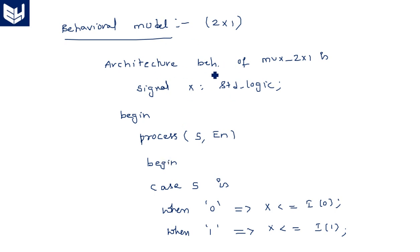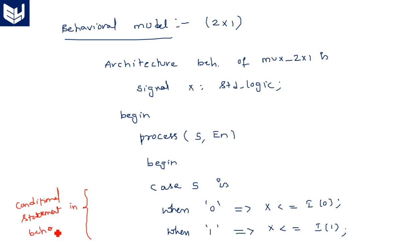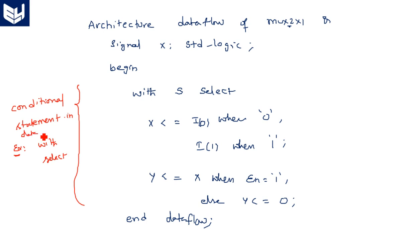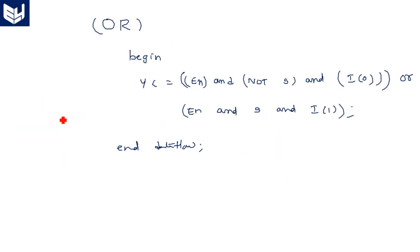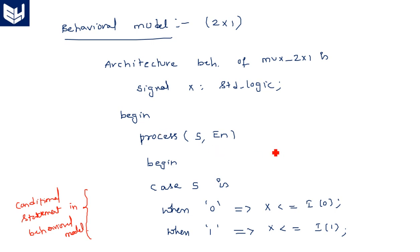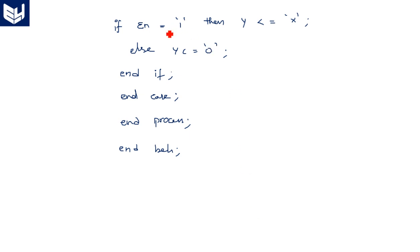In the architecture, the process includes instances that are changing. The with...select statement is the conditional statement used in the data flow model, while case...when is the conditional statement used in the behavioral model. So: case s is, when '0' => x <= i(0), when '1' => x <= i(1). Once x is ready, we check the enable pin — if enable is 1, y is assigned x; otherwise it is 0. Whatever we have opened, everything must be closed.